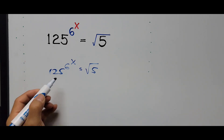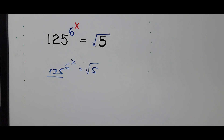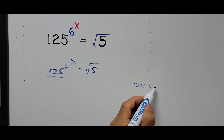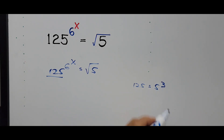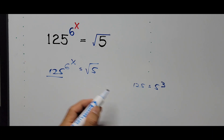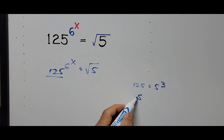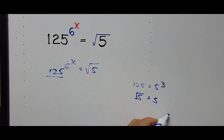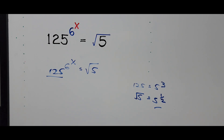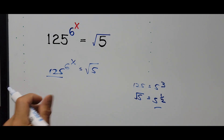Focusing on the left side of the equation, 125 can be written the same way as 5 to the 3rd power. And the square root of 5 can be written as 5 raised to the 1/2 power — that's the equivalent in exponential form. Let's substitute these values into the equation.